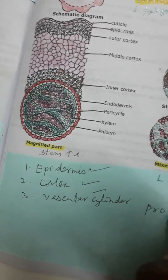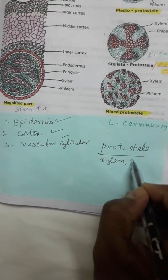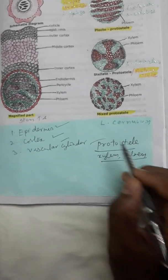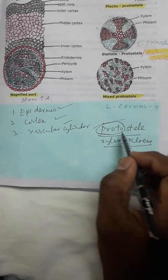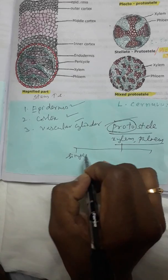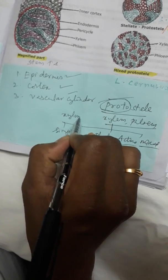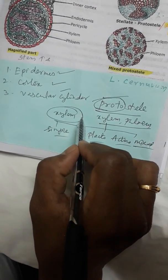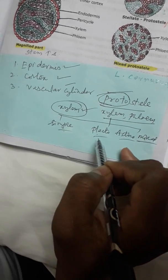The protostele is divided into four types based on the arrangement of xylem tracheids: simple protostele, plectostele, actinostele, and mixed protostele. In Lycopodium species, these show diversified steles. The first type is simple protostele — the xylem is centric and surrounded by phloem, both present at the center of the stem. Example: Lycopodium selago, and also Rhynia and Psilotum.